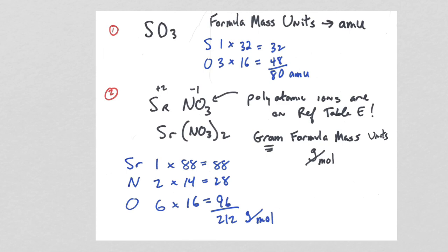Questions 1 and 2: whether you're asked to calculate formula mass or gram formula mass, the only difference is the units — amu versus grams per mole. List the different elements, here S and O, multiply the number of times they appear by their gram formula masses from the periodic table, then add them up. Question 2 is more difficult because there's a polyatomic ion — remember to use reference table E.